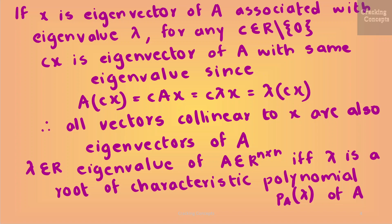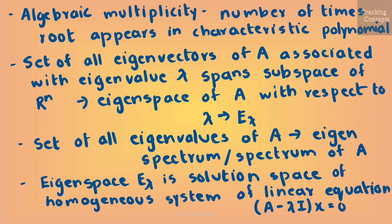Lambda is an eigenvalue of A if and only if lambda is a root of the characteristic polynomial P_A(λ). The algebraic multiplicity of λ_i is the number of times the root appears in the characteristic polynomial. The set of all eigenvectors of A associated with an eigenvalue lambda spans a subspace of R^n called the eigenspace of A with respect to lambda, denoted E_λ.